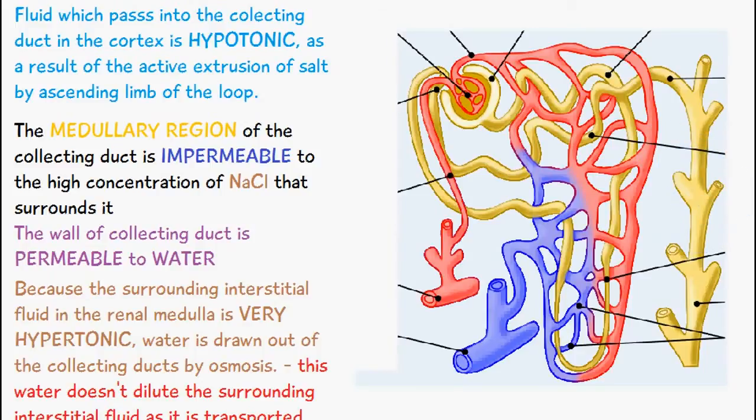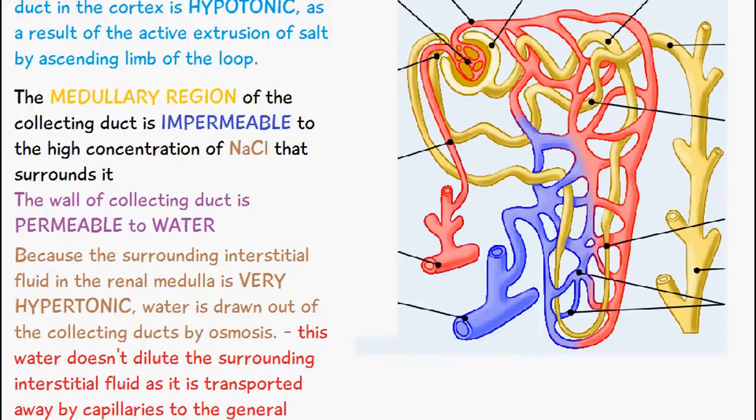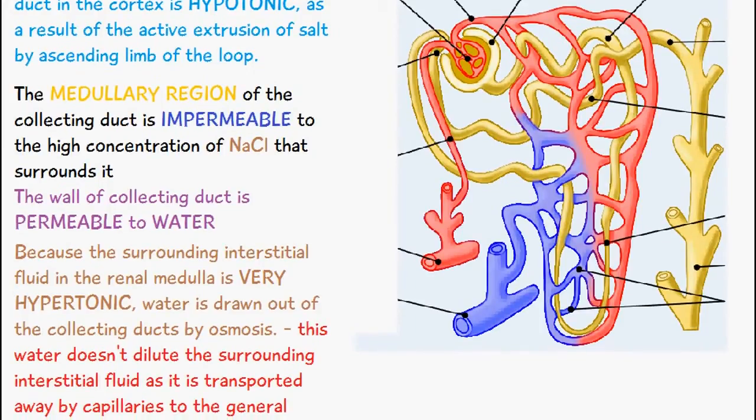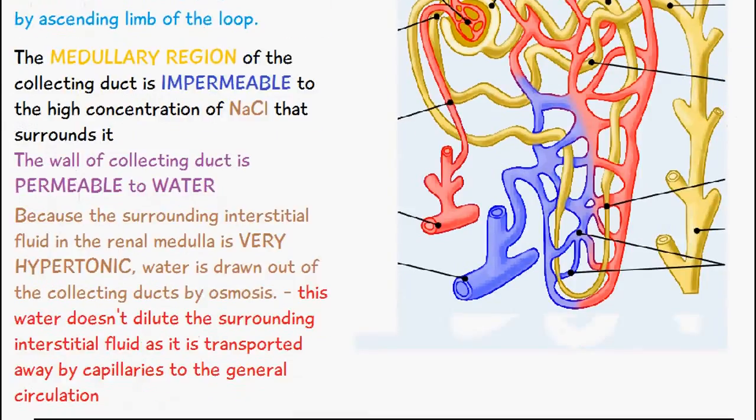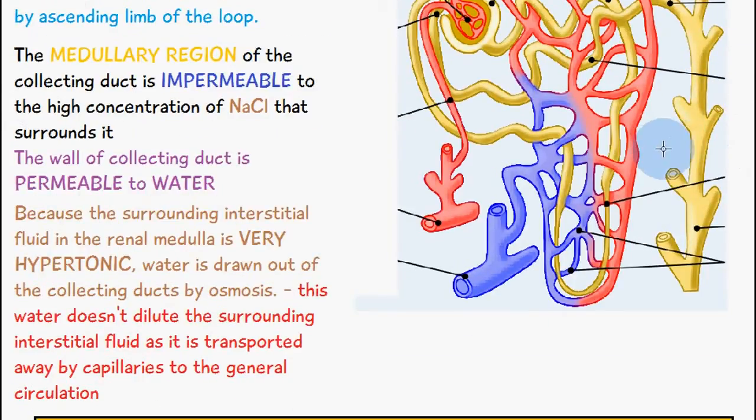Because the surrounding interstitial fluid in the renal medulla is very hypertonic, water is drawn out of the collecting ducts by osmosis, and once the water moves out of the collecting duct it doesn't dilute this highly concentrated environment of the renal medulla. Instead the water molecules which are drawn out are taken away by peritubular capillaries which are surrounding the actual collecting duct.